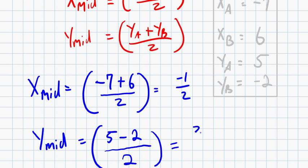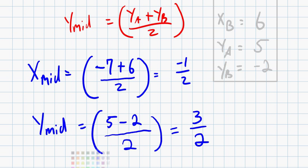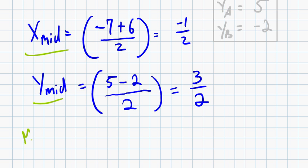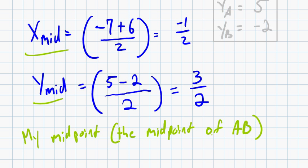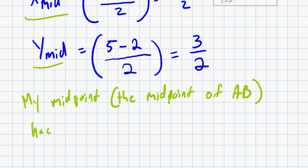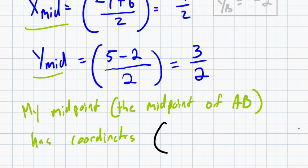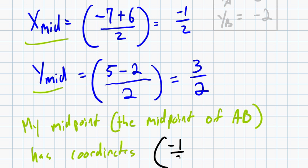Great! So now I know the x-coordinate of my midpoint and the y-coordinate of my midpoint. So I know that my midpoint, or we can be very technical and call it the midpoint of AB, has coordinates, and remember we're going to put our x-coordinate first and our y-coordinate second. So it has coordinates negative 1 half, comma, 3 halves. Remember these are two different numbers. So don't go adding them together. A coordinate, you have two different coordinates that you need for your midpoint.